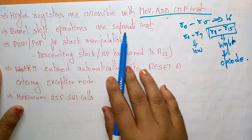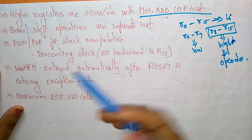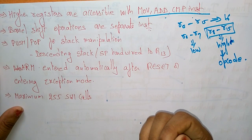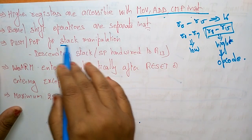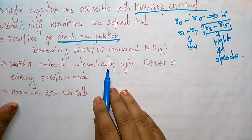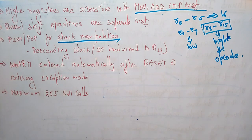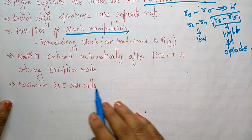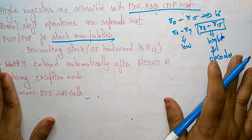Barrel shifter operations are separate instructions. Push and pop instructions are used for stack manipulation. The stack pointer is hardwired to R13, which is reserved for stack operations. ARM mode is entered automatically after reset or when entering exception mode. The Thumb instruction set supports a maximum of 255 SWI calls.